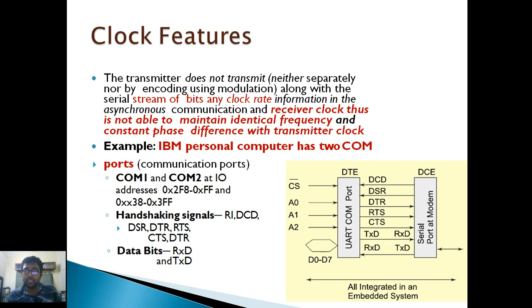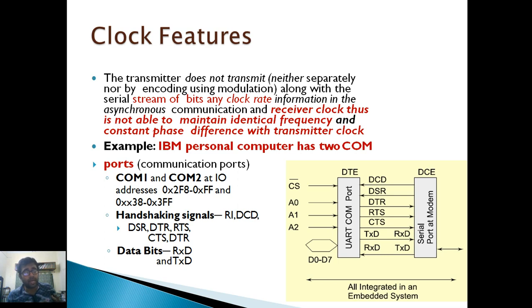A receiver clock is not able to maintain identical frequency and constant phase difference with the transmitter clock. Without the clock signal provided alongside the serial bits, the identical frequency cannot be maintained.